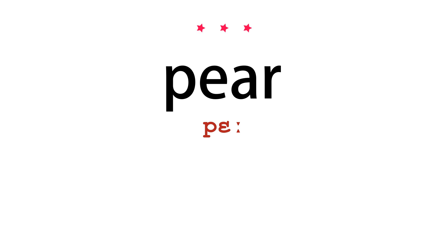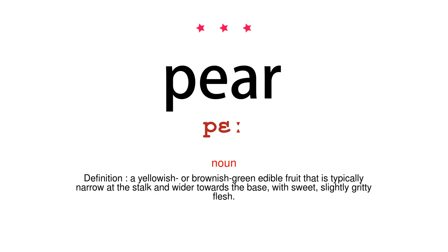Pear. Noun. Definition: A yellowish or brownish-green edible fruit that is typically narrow at the stalk and wider towards the base, with sweet, slightly gritty flesh.